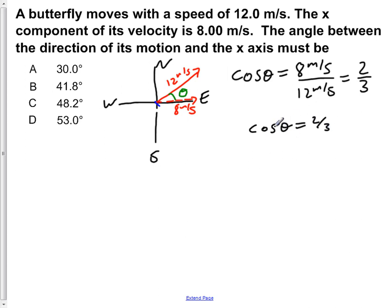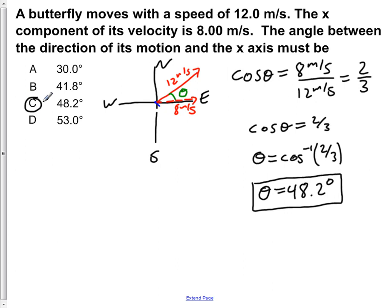Now to solve for theta we take the cos inverse of both sides. So theta is equal to cos inverse of two-thirds. And if we carry this out in your calculator you would find theta is equal to 48.2 degrees. So this corresponds to an answer C which is 48.2 degrees.